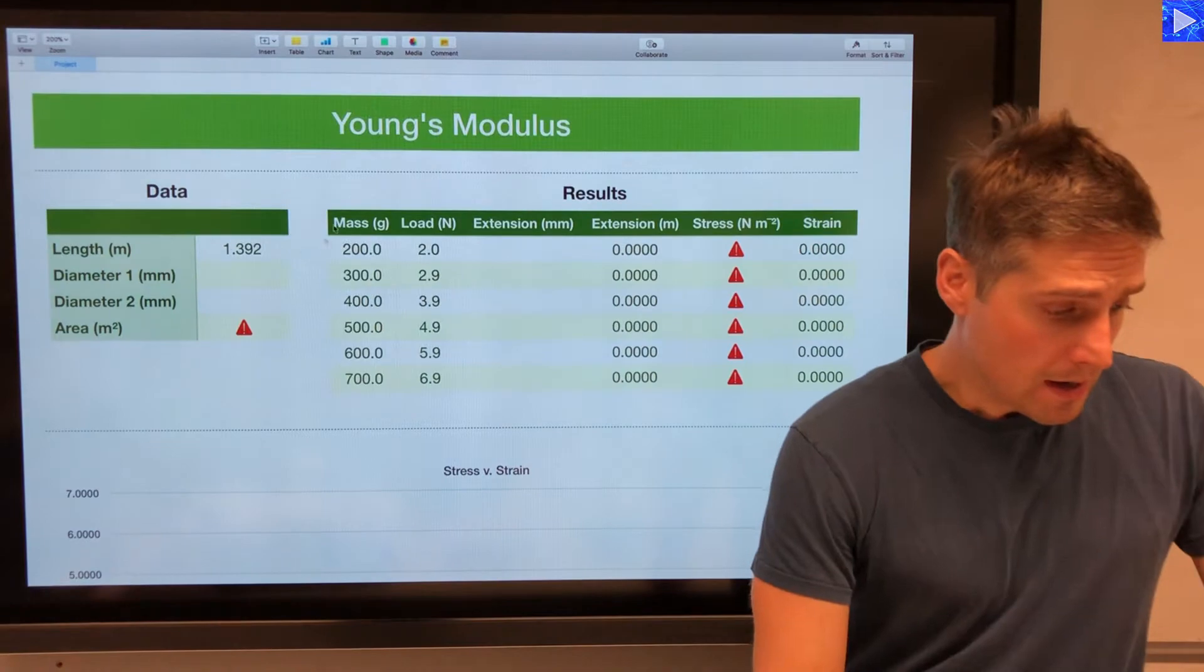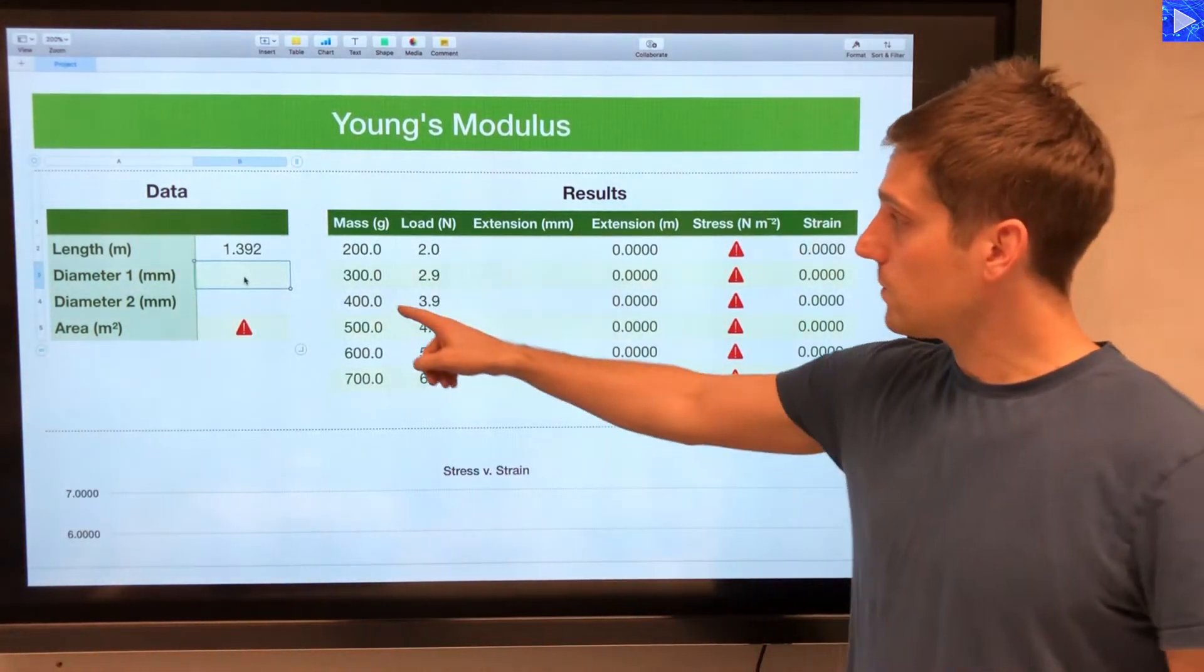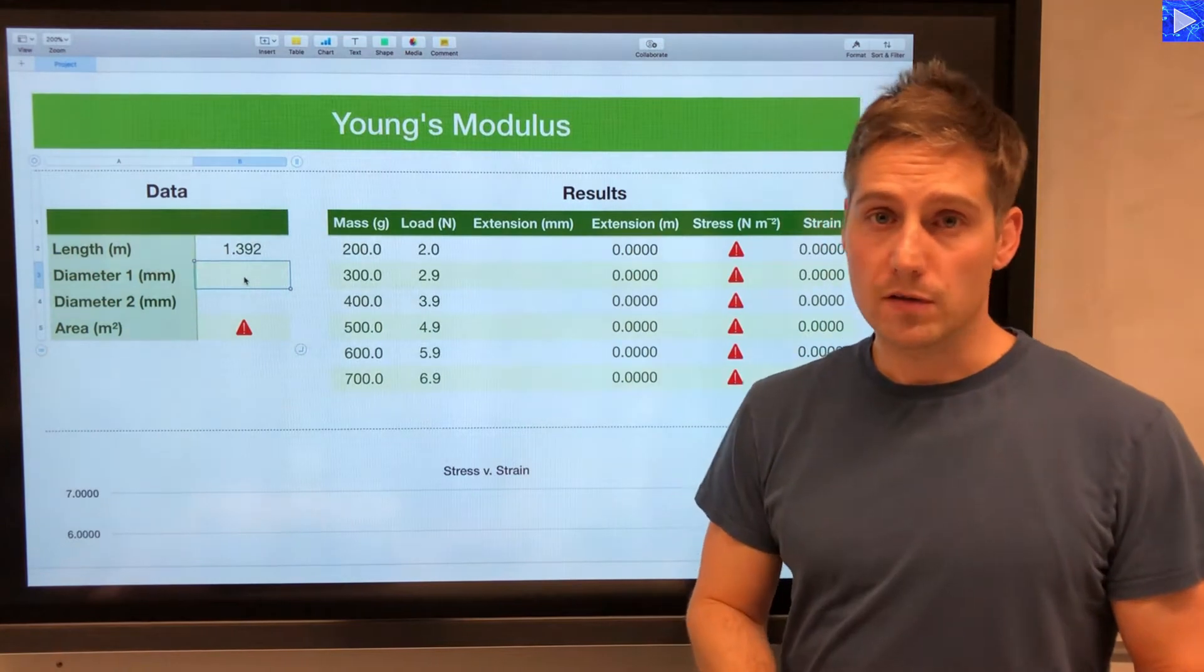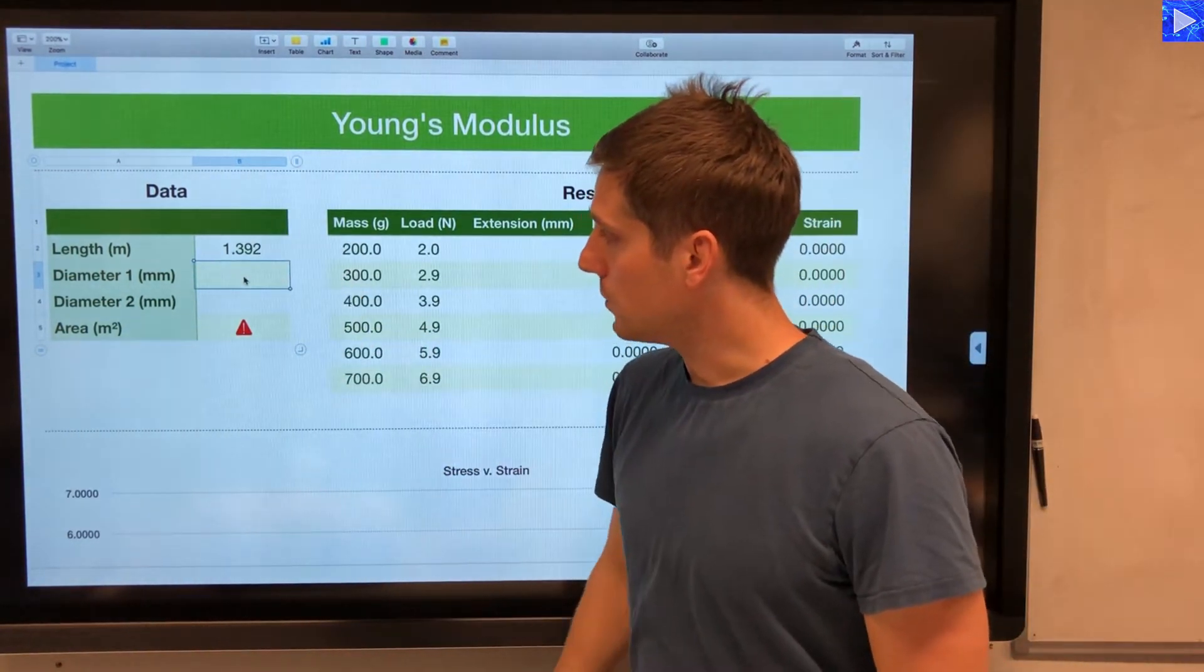So that's what I'm going to do now. I'm going to start off with this table over here. I've already inputted the original length of the wire, so that's in there, 1.392 meters.